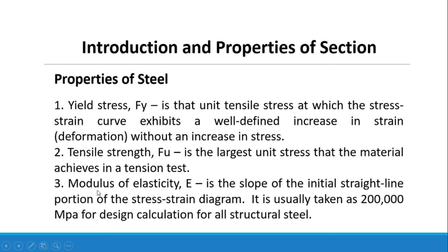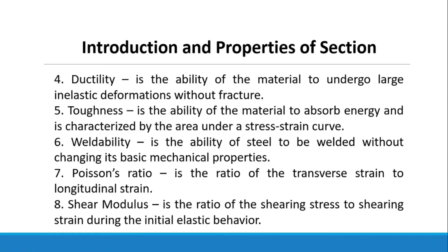Number three, modulus of elasticity, or E, is the slope of the initial straight line portion of the stress-strain diagram. It is usually taken as 200,000 MPa, or megapascal, for design calculations for all structural steel, or 200 GPa, or gigapascal. Number four, steel should have ductility — the ability of the material to undergo large inelastic deformations without fracture. Number five, steel should have toughness — the ability to absorb energy, characterized by the area under a stress-strain curve. Number six, weldability is the ability of steel to be welded without changing its basic mechanical properties.